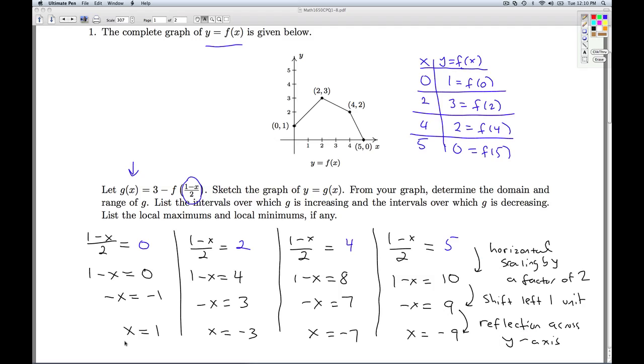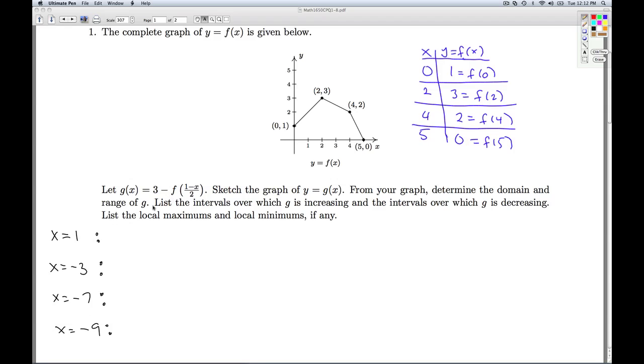Now, these are the new inputs. These are the new x-coordinates on the graph of g. So I'm going to plug each of these values for x into the formula I have for g. And if I've done everything correctly, when I simplify what's inside, I should get back to these original inputs to f. So now it's time to plug each of our new x-values into the function g. So g of 1, by definition, is 3 minus f of 1 minus 1, all divided by 2. Which is 3 minus f of 1 minus 1 is 0, 0 divided by 2 is 0. So 3 minus f of 0. Sure enough, f of 0 is a function value I know. f of 0 is 1. So I get 3 minus 1 equals 2.